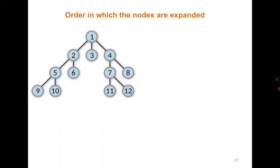From vertex 1 I go to all its neighbors: 2, 3, 4. From 2 I go to neighbors 5 and 6. The neighbors of 4 are 7 and 8. Then 9 and 10, and the neighbors of 7 are 11 and 5. BFS visits all neighbors of a vertex level by level before moving deeper.